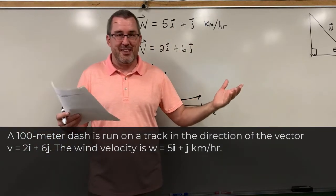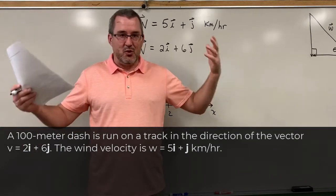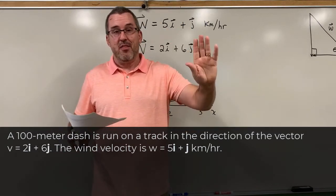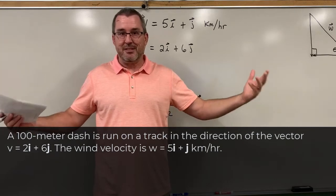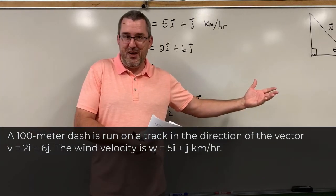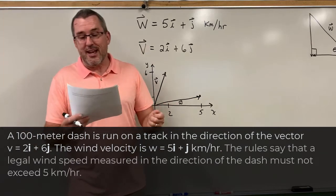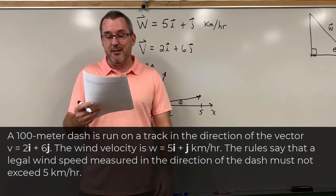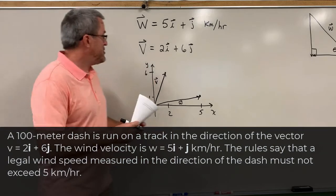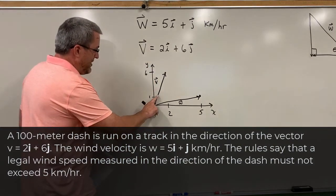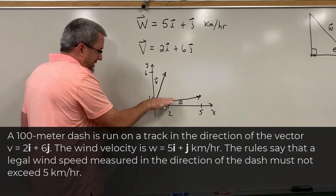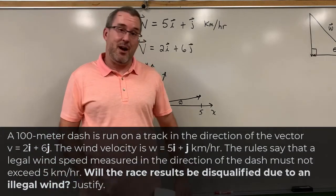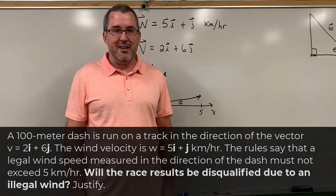Here's the real life nature of it. In a collegiate, high school, or Olympic event, if the wind is blowing at the backs of the runners, world records might not be able to stand if the wind is assisting too much. So the question is this: the rules say that a legal wind speed measured in the direction of the dash must not exceed 5 kilometers per hour. So in this situation, if they're running along this vector and the wind is blowing along this vector, is there enough wind in the direction of the run to exceed 5 kilometers per hour, thus disqualifying any records in this race?